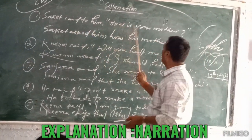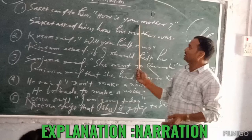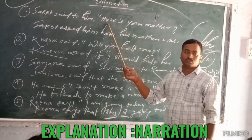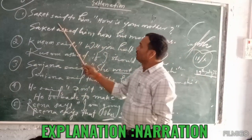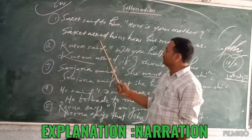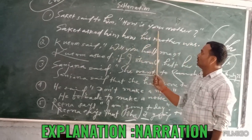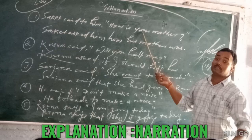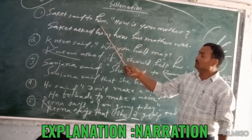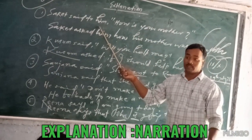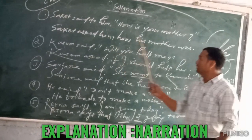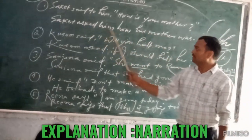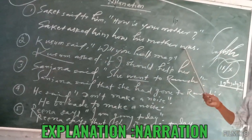Number one: Saket said to him, 'How is your mother?' In this sentence, the sentence belongs to interrogative. There are two words, and we have to apply 'ask.' Saket 'said to' means 'asked,' 'him' remains 'him.' This is an interrogative sentence, so 'your' is in possessive case. You changes from object, and 'you' here means possessive case is 'his.' So 'his mother' — 'how' changes into 'watched.' That's why the result is: Saket asked him how his mother was. This is the correct sentence.